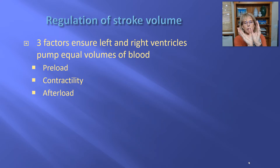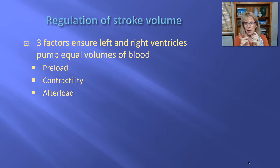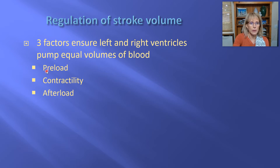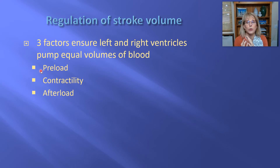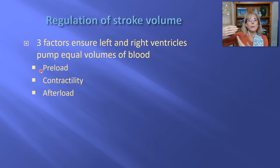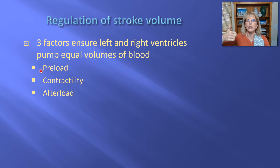There are three things that keep the two ventricles in sync, and one is most important. The three key things are preload, contractility, and afterload. Preload is essentially the pressure in the major veins forcing blood into the atrium. The more the atrium fills, the more blood fills the ventricle. Preload is proportional to end diastolic volume — increase preload, increase EDV; decrease preload, decrease EDV.